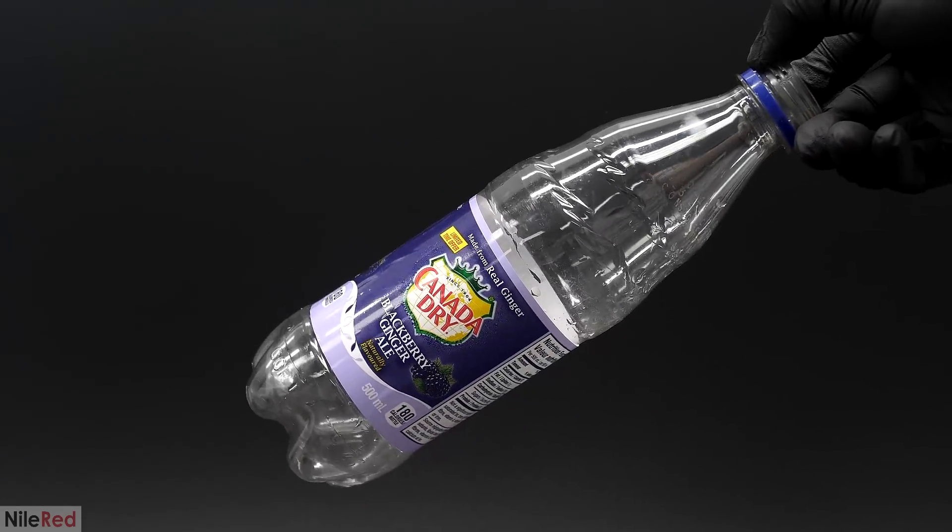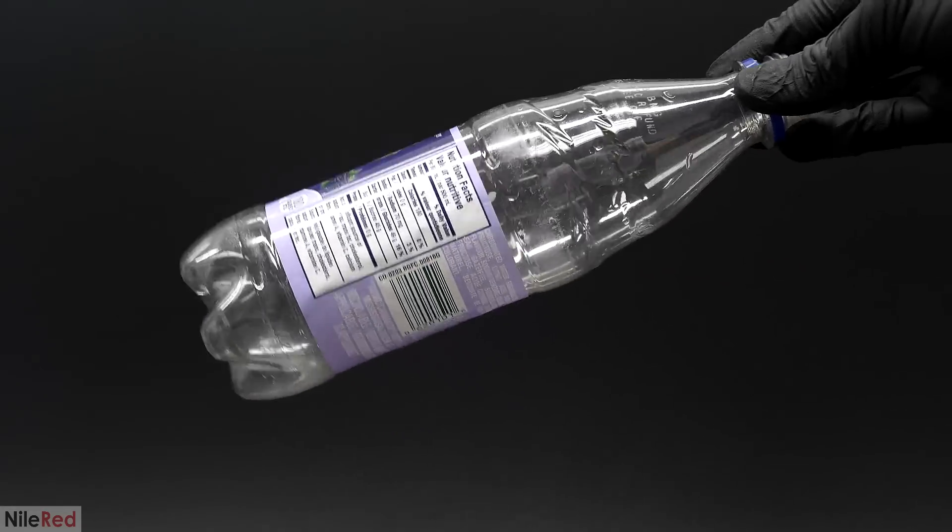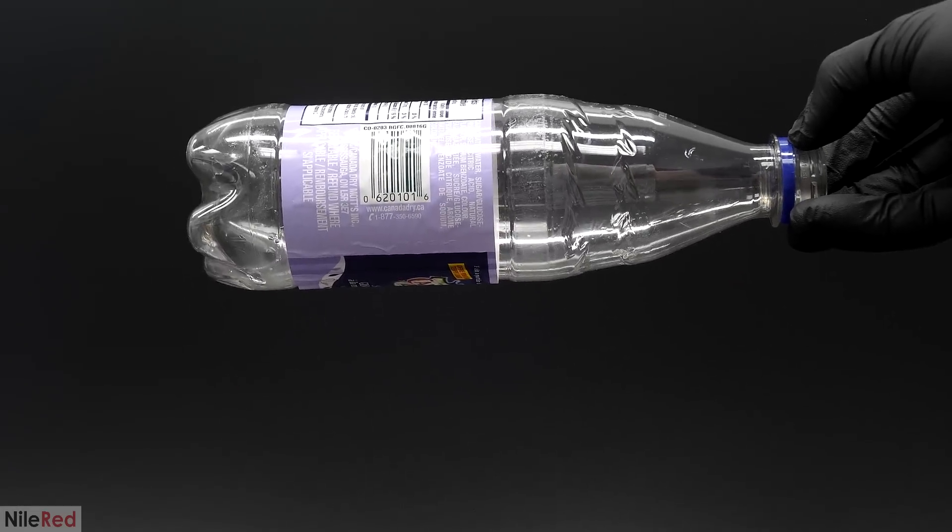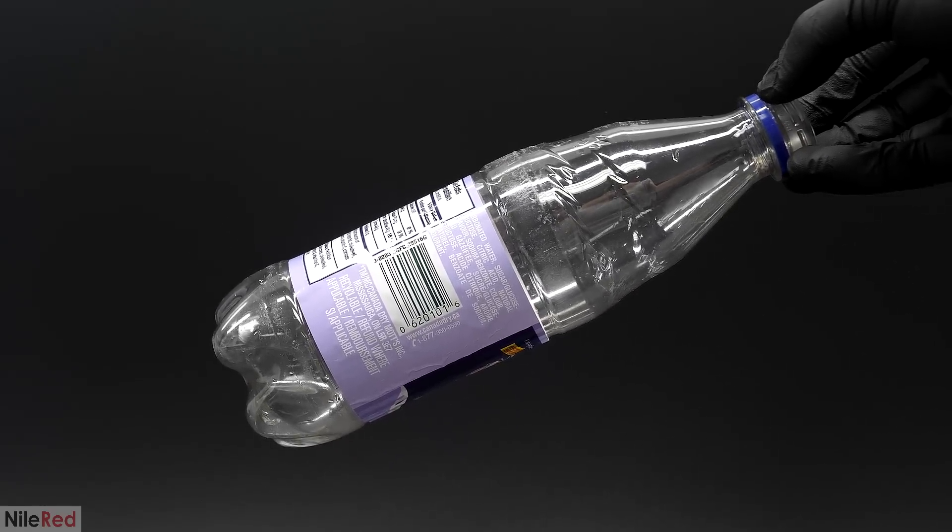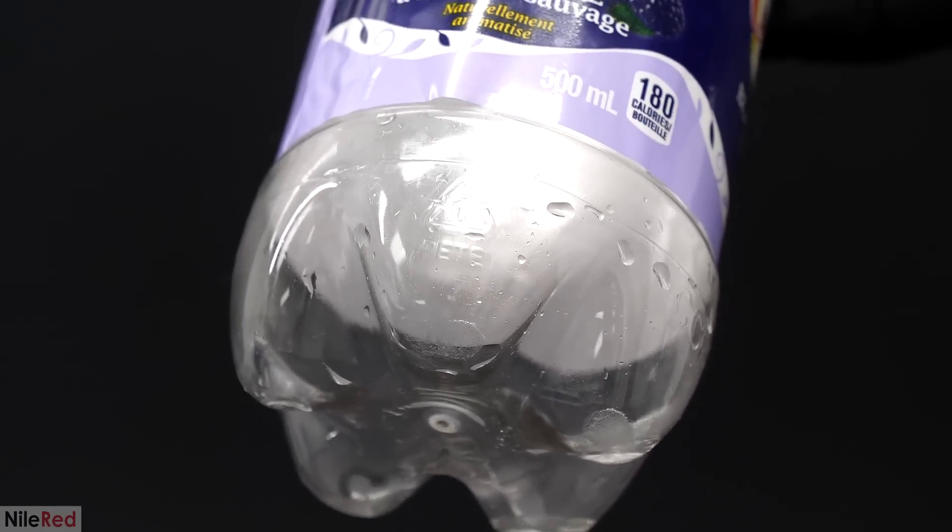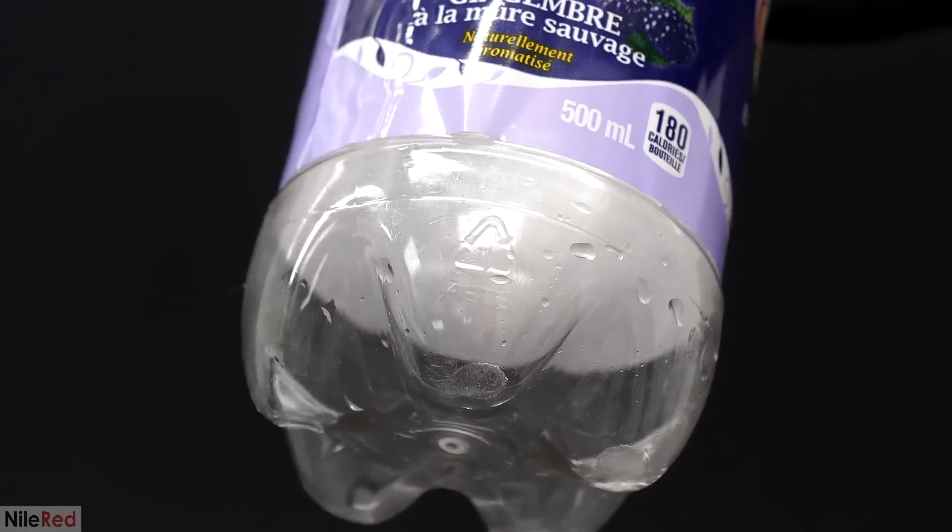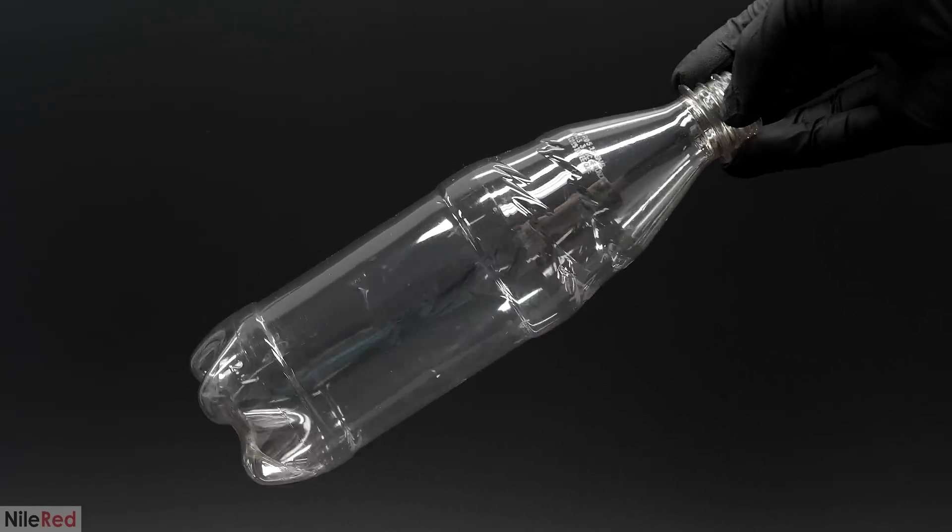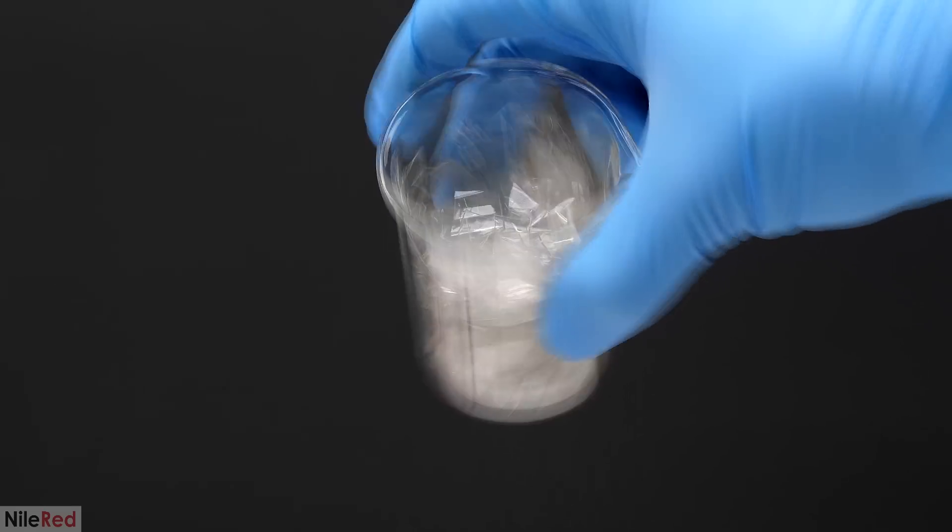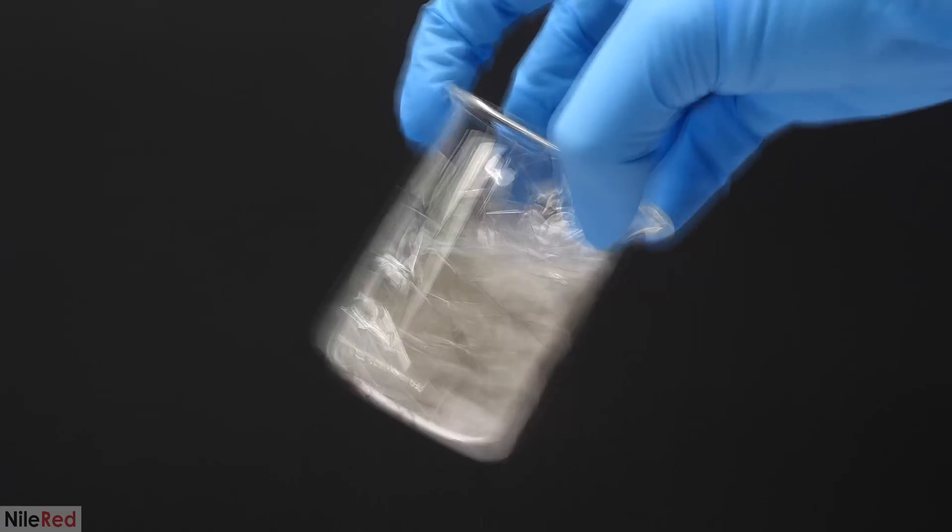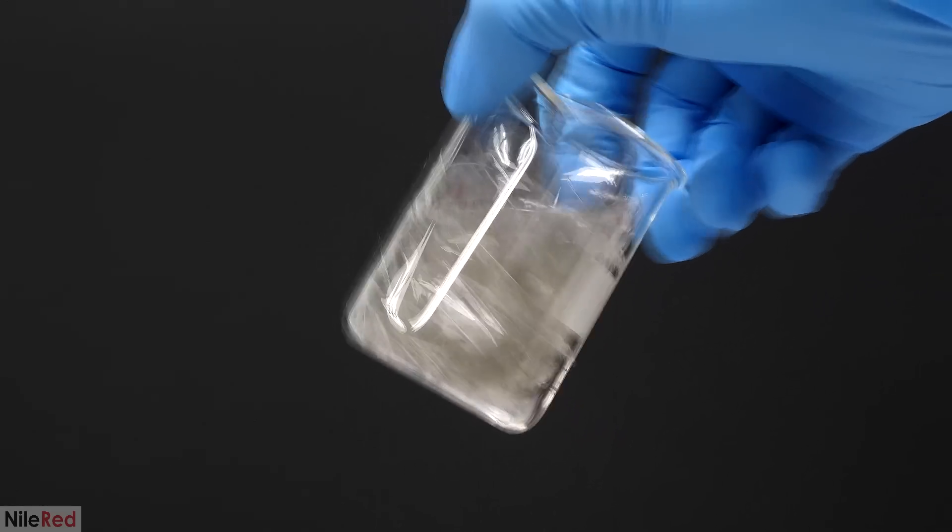Besides the chemicals, I of course also needed a plastic bottle. Pretty much all water and soda bottles should work, but it is a good idea to check that it's actually PET. This is very easy to do by just looking for the recycling number, and it should either say 1, or sometimes it's even just literally written PET. I took off the label, cleaned off all the glue, and then chopped it into pieces using scissors. I also weighed it out, and in total, there were 22.5 grams of plastic here.